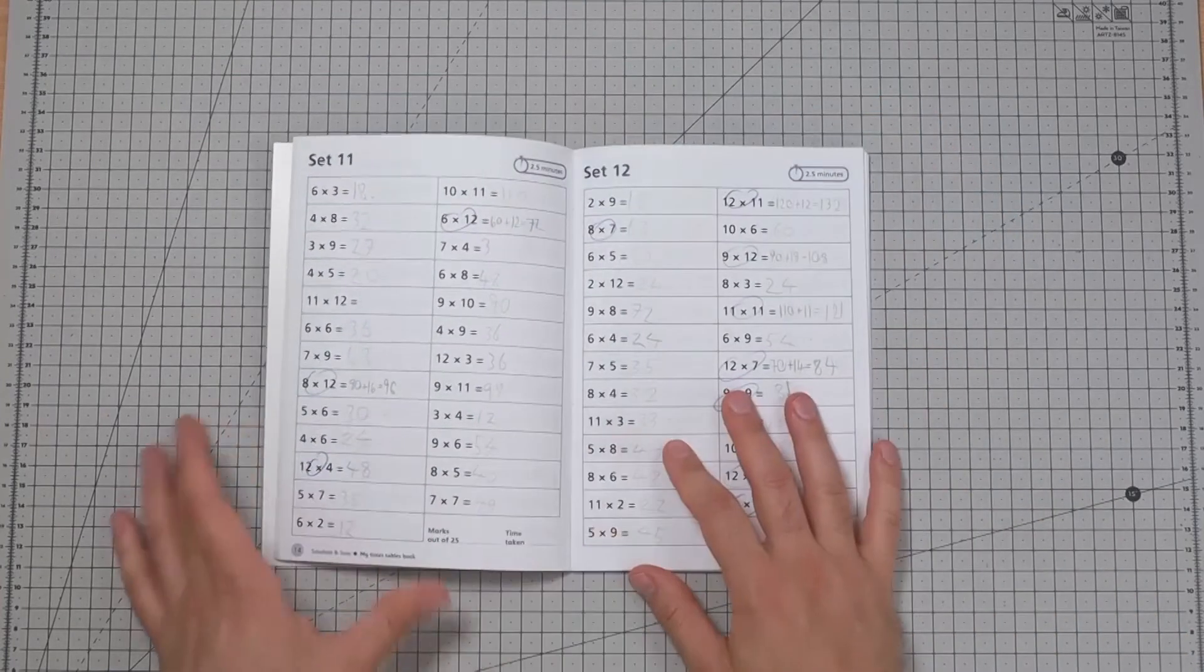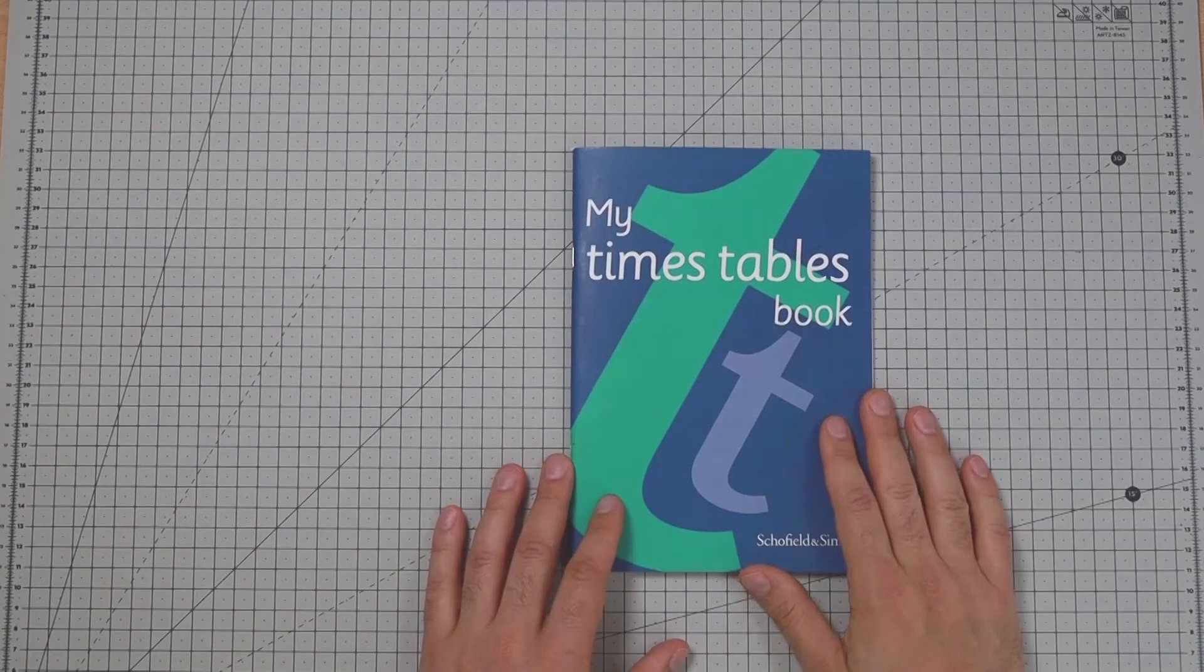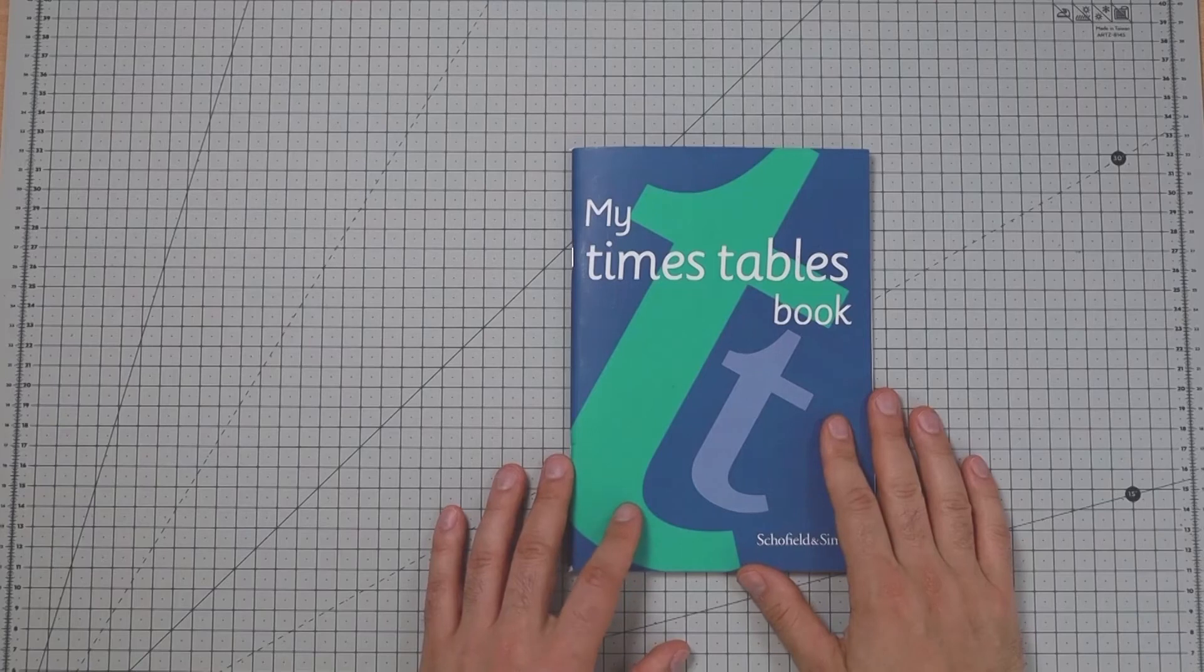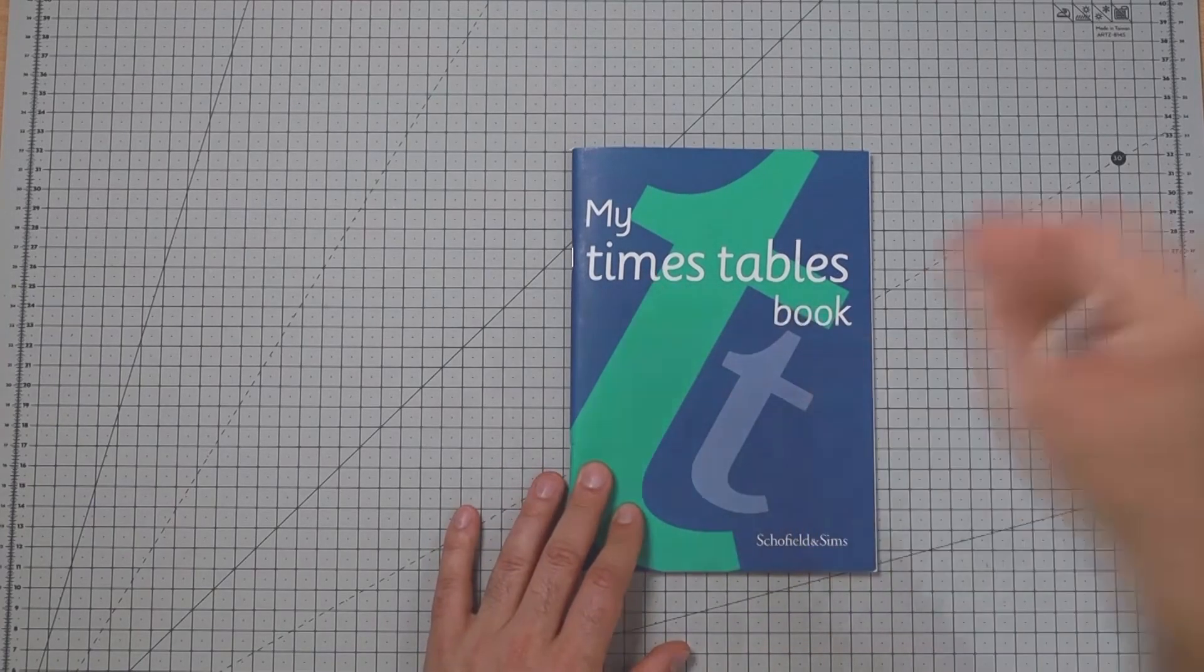Altogether useful book. I guess you can print this off the internet quite easily. Not sure I'd bother with this one. There you have it. Schofield and Sims My Times Tables Book.